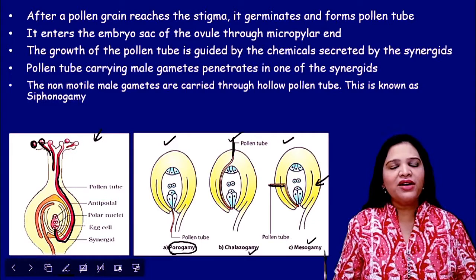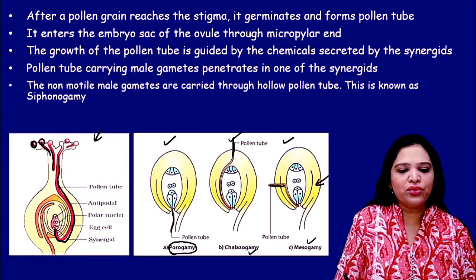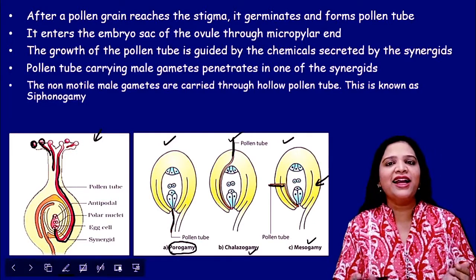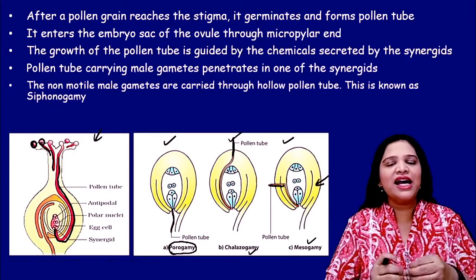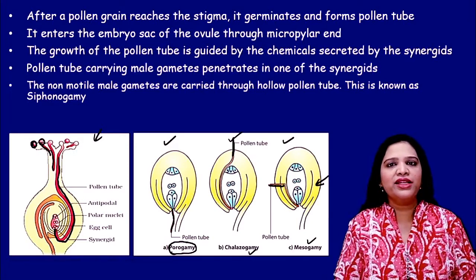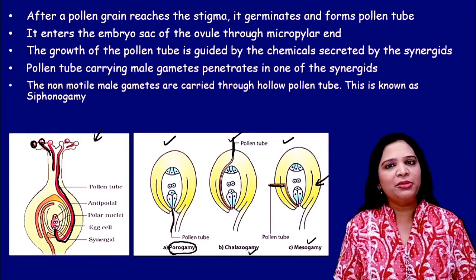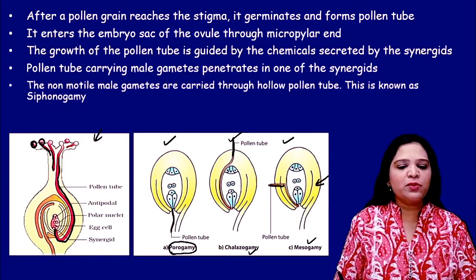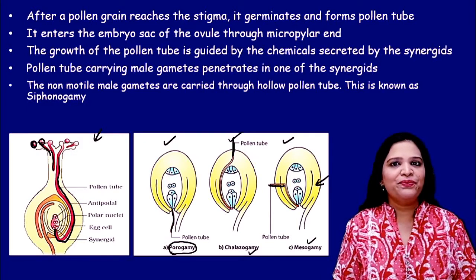Whatever the route of entry, they finally enter through the micropylar end, penetrate the synergids, and release the male gametes. In the majority of angiosperms, porogamy is the route of entry of the pollen tube.